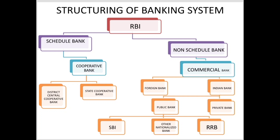Next, we will see the structure of the banking system. Banks are divided into scheduled banks and non-scheduled banks. There are cooperative banks — state cooperative bank, district and central cooperative bank. Commercial banks include foreign banks and Indian banks. Indian banks are further divided into public and private banks.